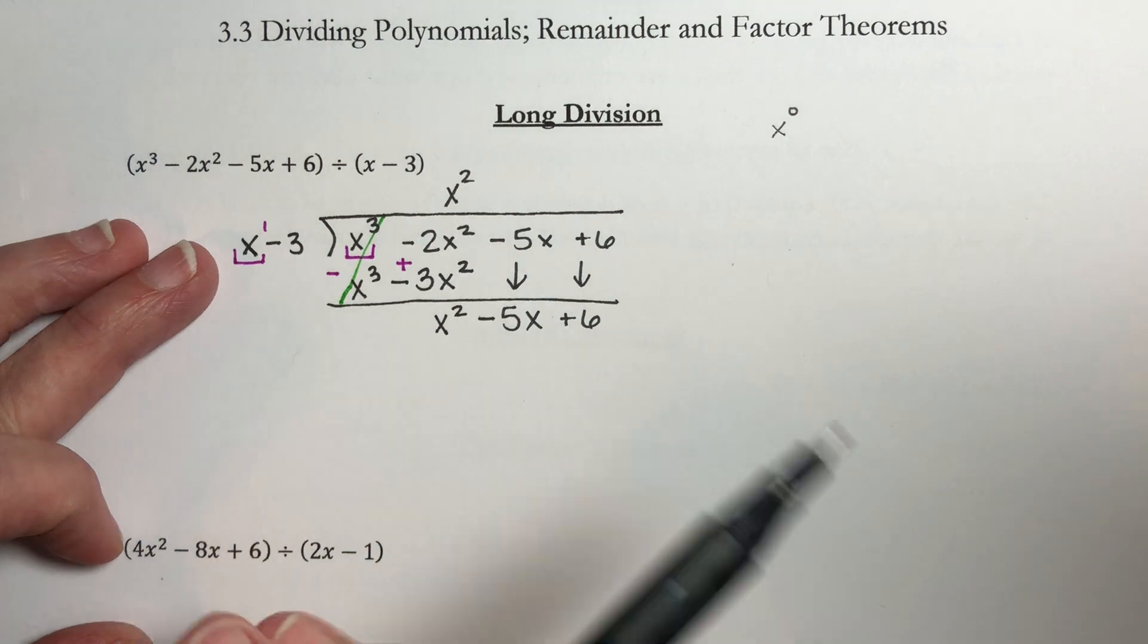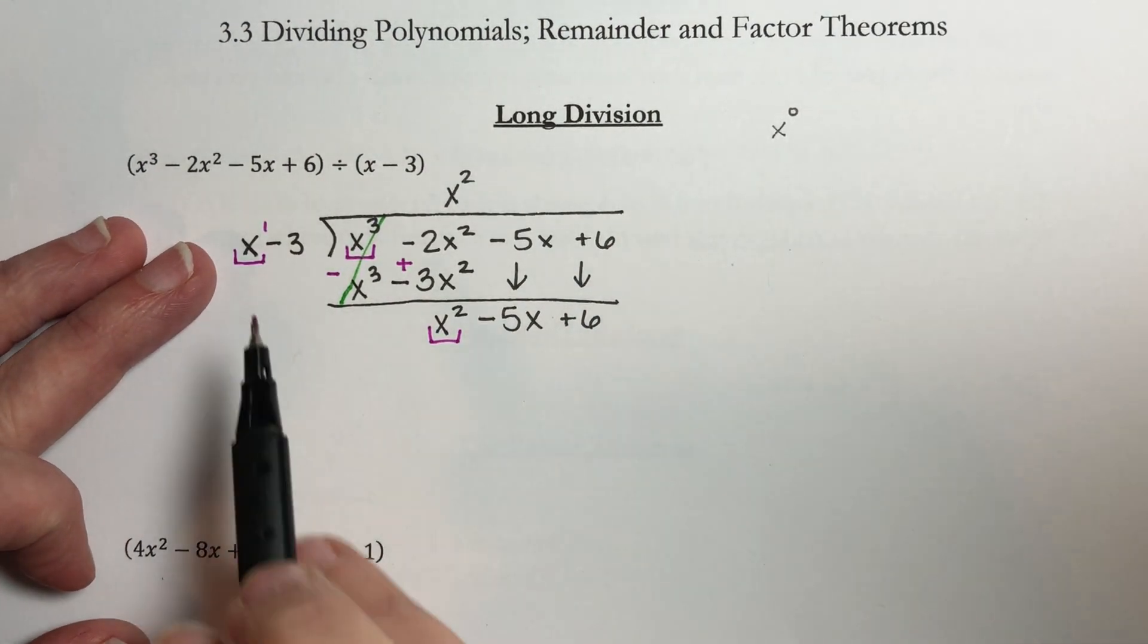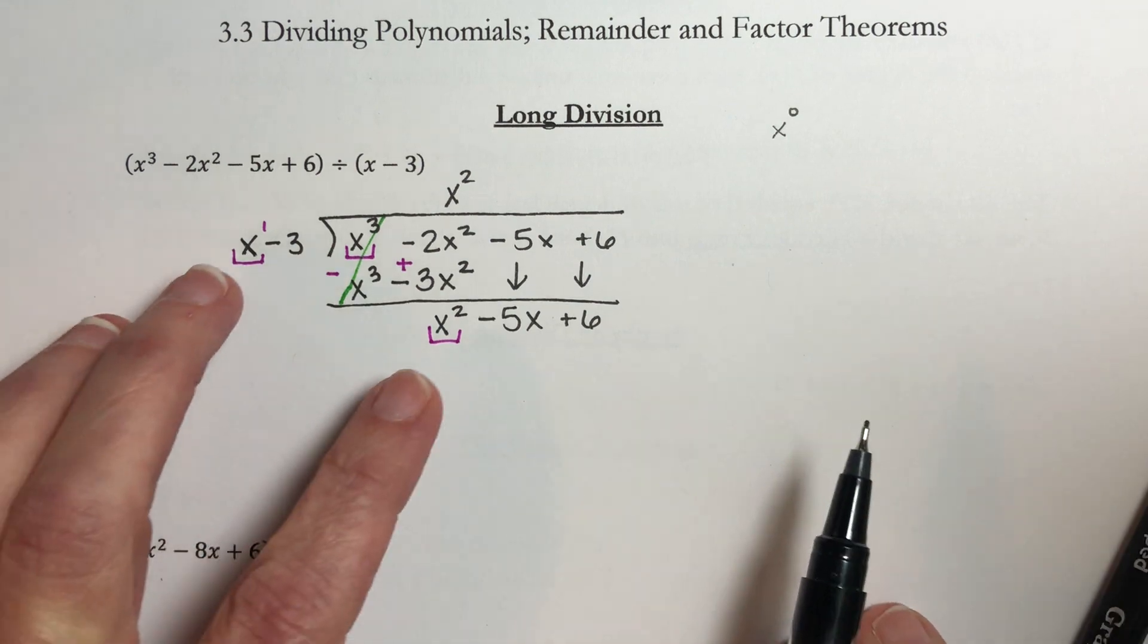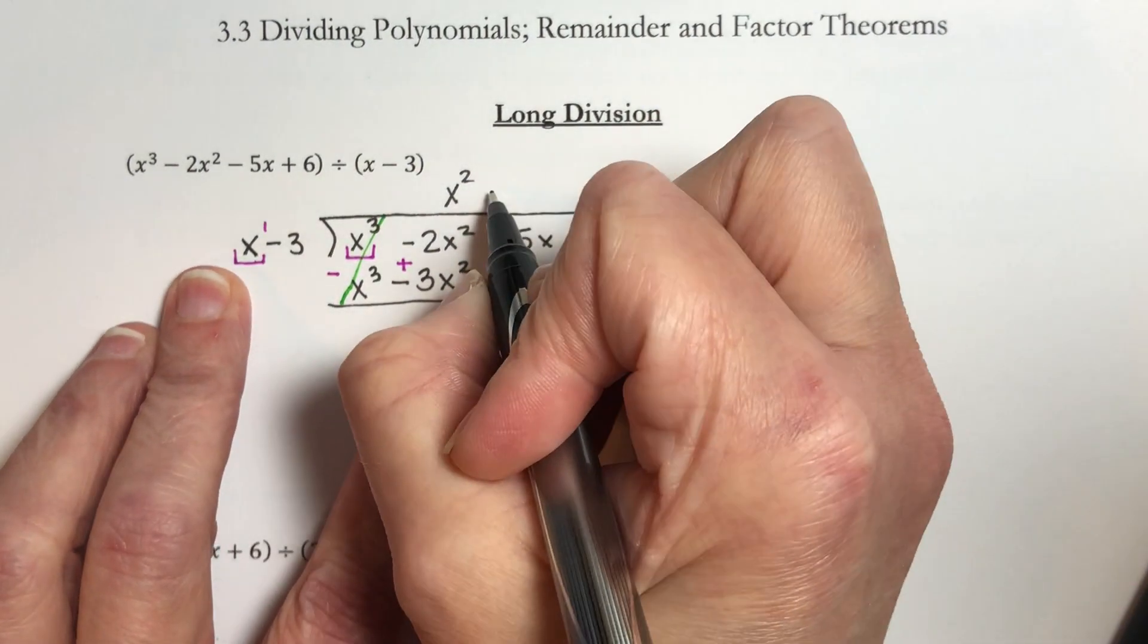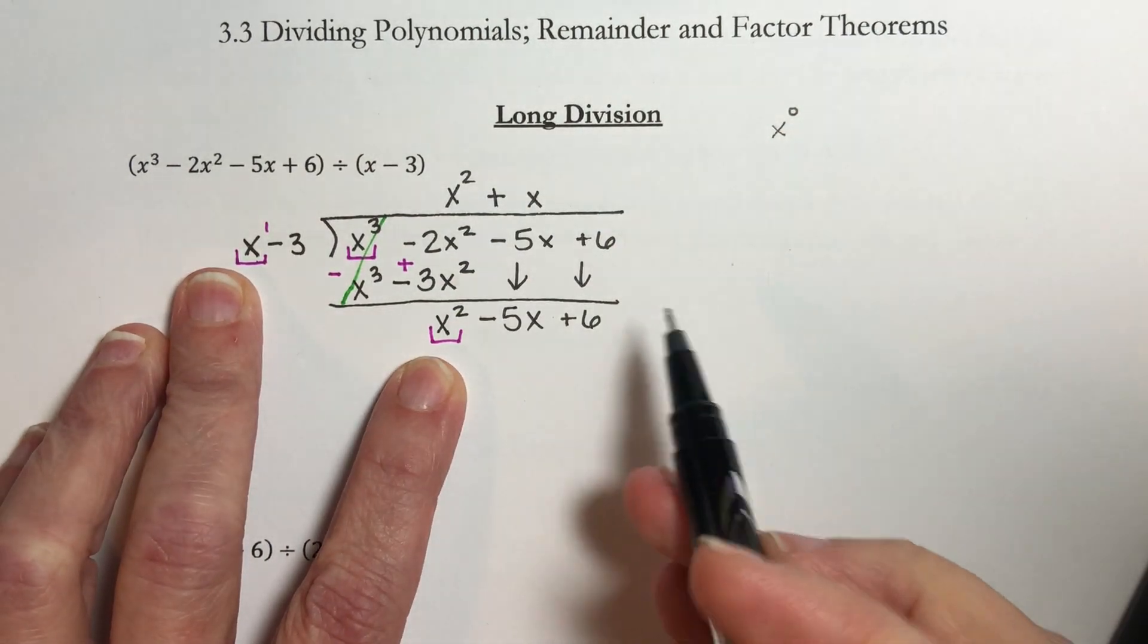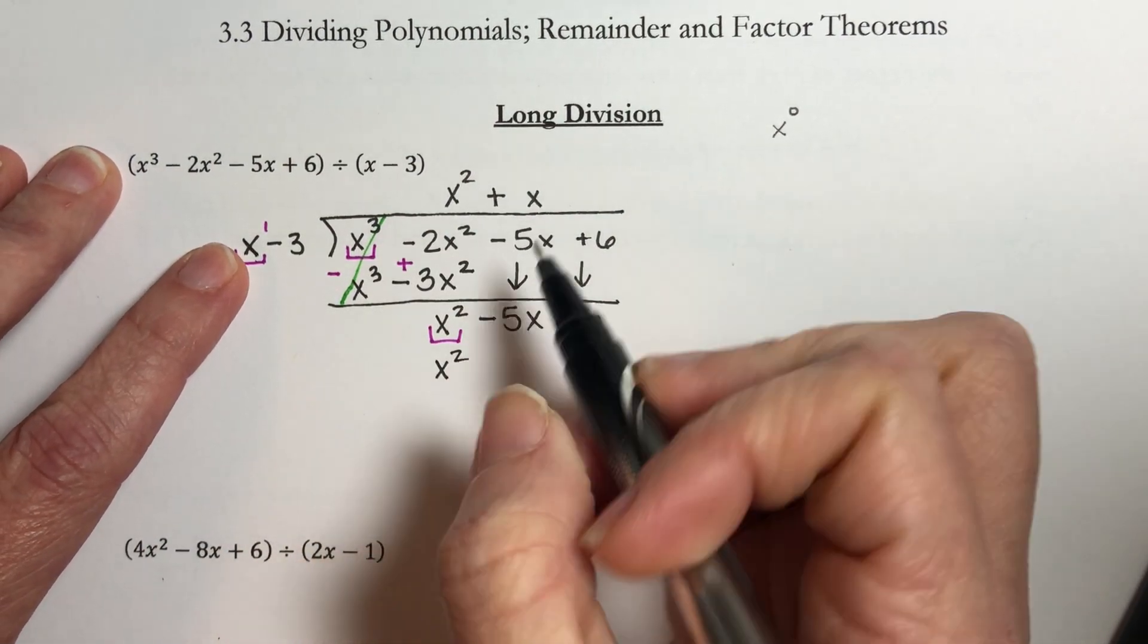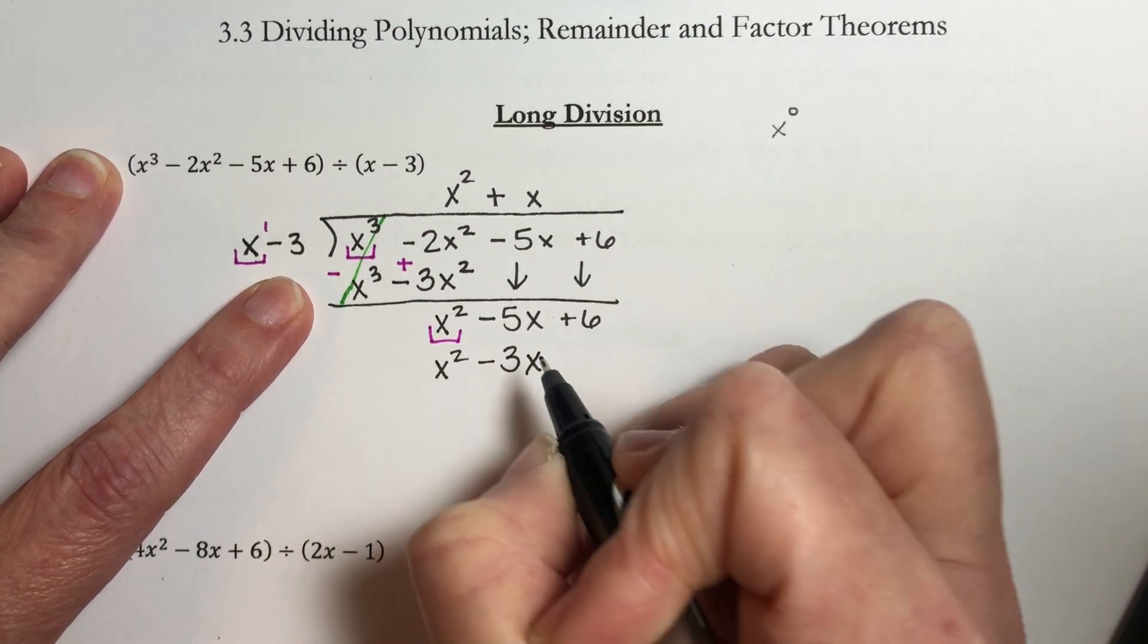I want my x to become an x squared. What do I have to multiply this by to get to an x squared? Well here I have one of them, I need two of them, so I need to multiply by another x. Now my signs here are the same, they're both positive, so I'm going to multiply by a positive x. Now take the x and distribute it through here. x times x is x squared. x times negative 3 is negative 3x.